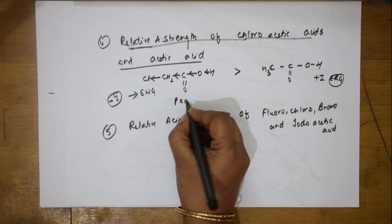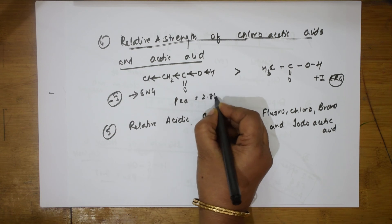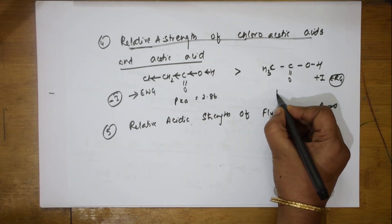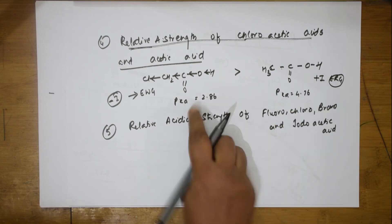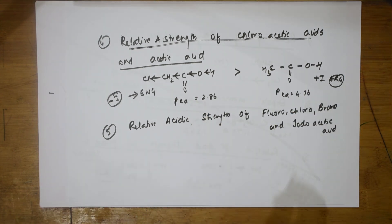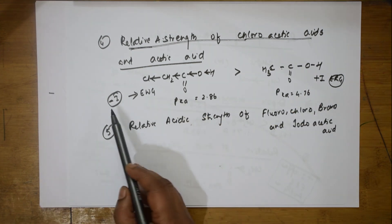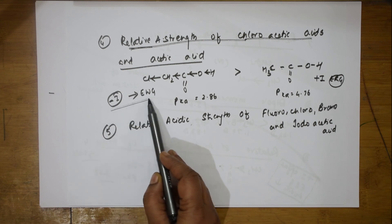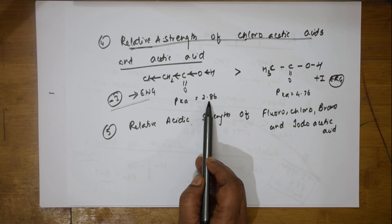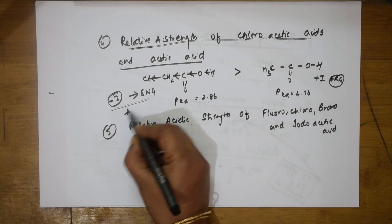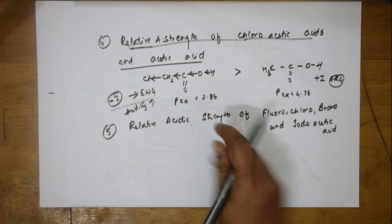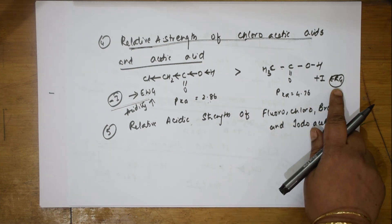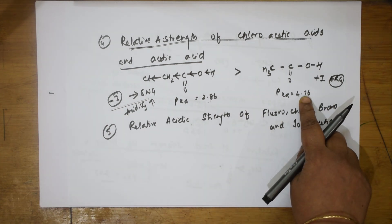So the key concept is: minus I effect — electron withdrawing group — acidity will be greater. Plus I effect — electron releasing group — acidity will be less. Remember: smaller the pKa value, stronger is the acid.